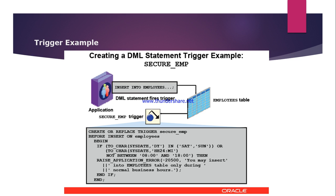Triggers and constraints work in a similar way. The difference is that constraints can apply to either new data, old data, or both, whereas a trigger only applies to new data. Also, a constraint must be specified while creating a table, whereas a trigger is created after the table is created. This is the main difference between a trigger and a constraint.